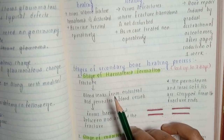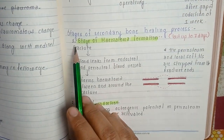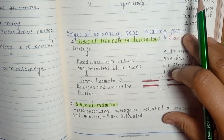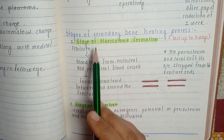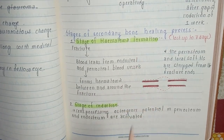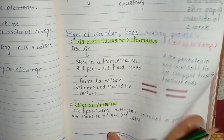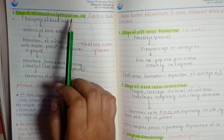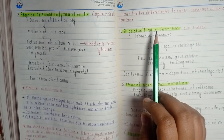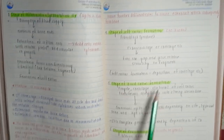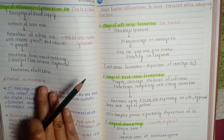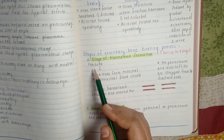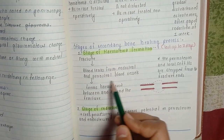There are six stages of fracture healing. First, the stage of hematoma formation; then the stage of induction; then the stage of inflammation or granulation tissue; the stage of soft callus formation; the stage of hard callus formation; and finally the stage of remodeling.